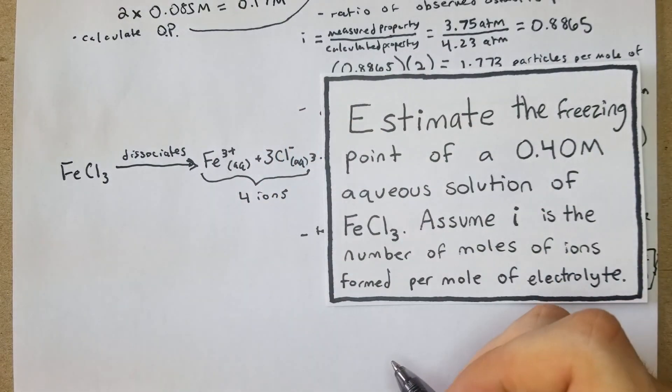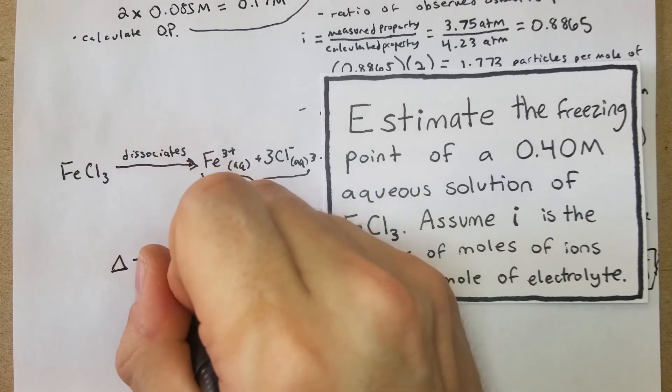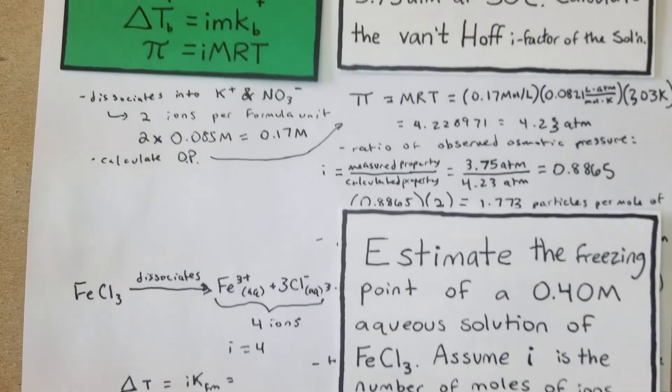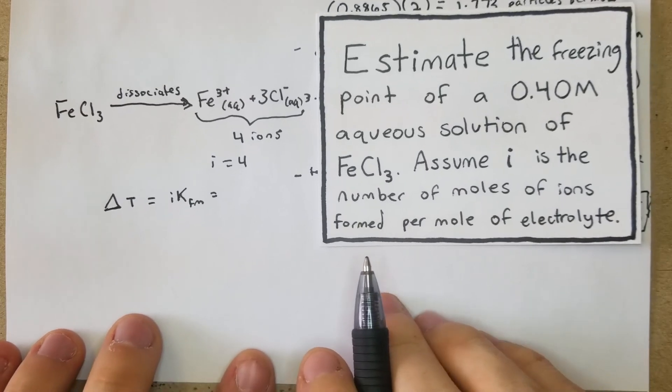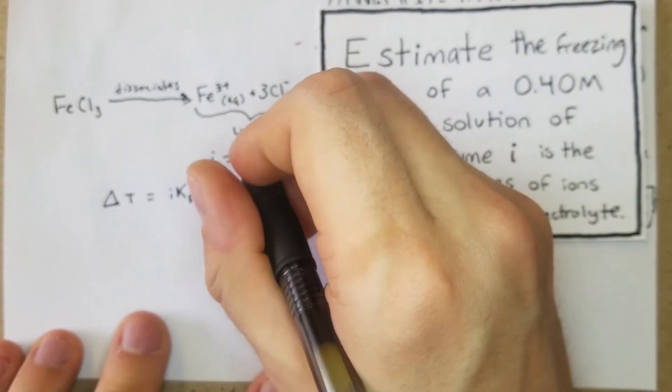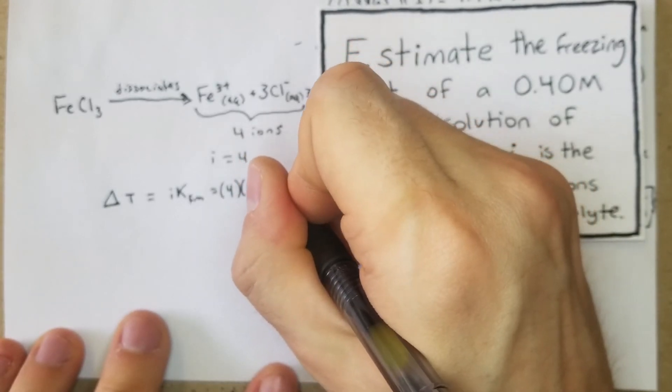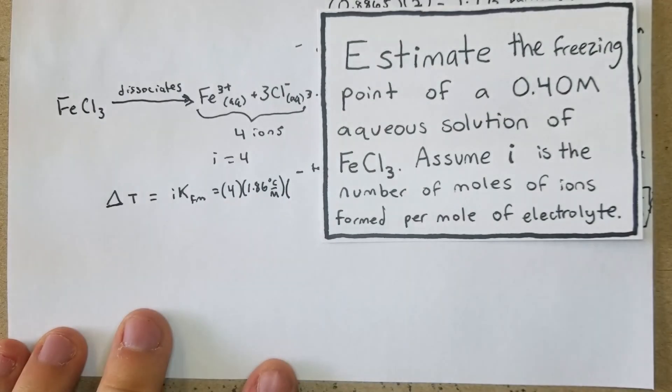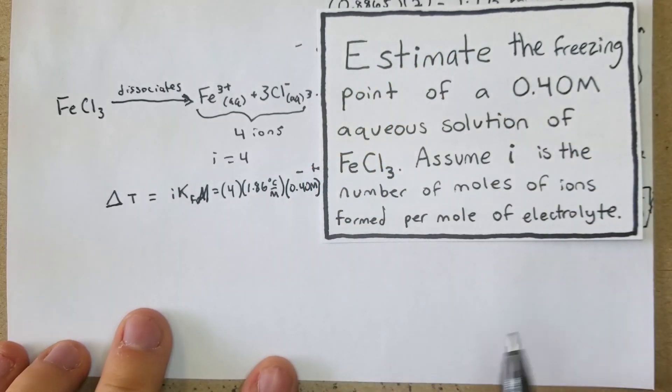From there we have a total of four ions. There's two different ions, but basically what we're going to see is our i equals four here. And now what we're going to do is our delta T equals iKfm, which is one of our formulas there. So we have four times the i number of ions, then we have our Kf which is 1.86 degrees Celsius per mole, times our M, 0.40 molar, and now we're just going to multiply this out.